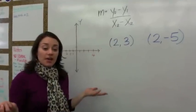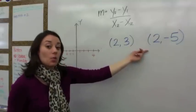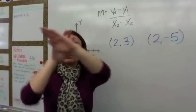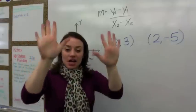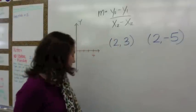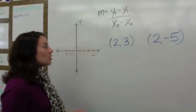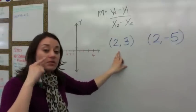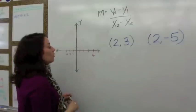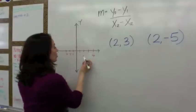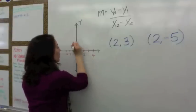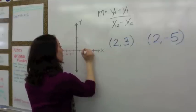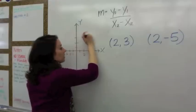Let's take a look at two other points and try to find their slope. Remember — slope, slope: change in y at the top, change in x at the bottom. The first thing you want to do is graph the points. We have 2, 3 — so we are at positive 2, and we go up 1, 2, 3. So there's the point 2, 3.